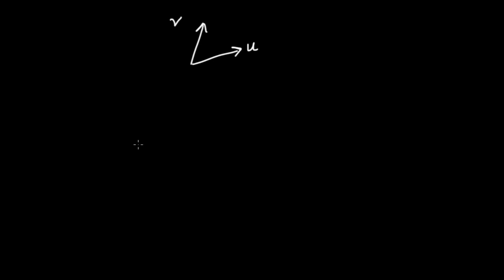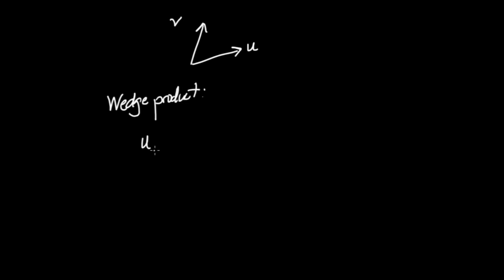Now if I ask you for another operation on vectors, you might say the cross product. That's a good idea, but we're working in two dimensions, and the cross product is only good in three dimensions — it's kind of a weird operation that can't do much else. But I've got an even cooler operation for you that you may not be familiar with: it's called the wedge product, symbolized by U wedge V with this upward triangle symbol.